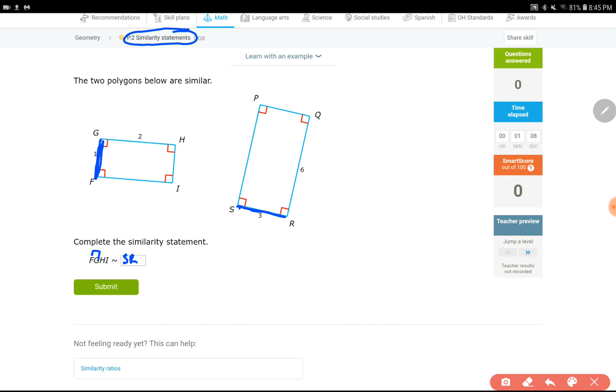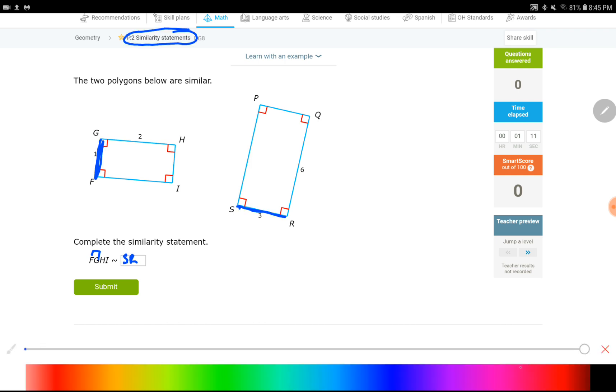Now, step two is do the same thing with the second and third letters, GH. Figure out how long it is. GH is two. It's the longer side and it goes with R and another side. Start from R and the longer side that you can only pick is this right here, RQ. So that means my third letter is going to be Q. And the fourth letter is, there's only one letter left, so it should be P. That's all you have to do.